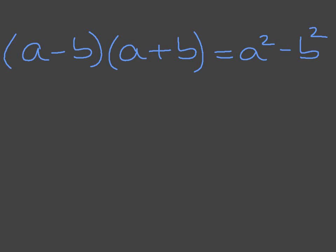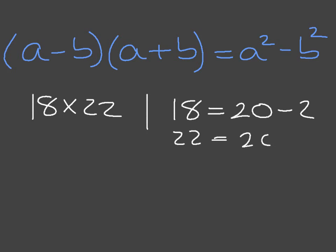Let's look at a quick example. If I were to ask you to calculate 18 times 22, I'm sure you can all calculate this using long multiplication, but another way of looking at this is to think of 18 as being equal to 20 minus 2, and 22 as being 20 plus 2.